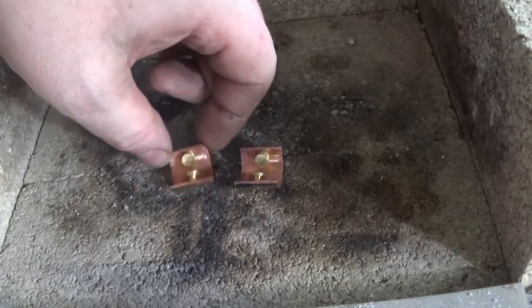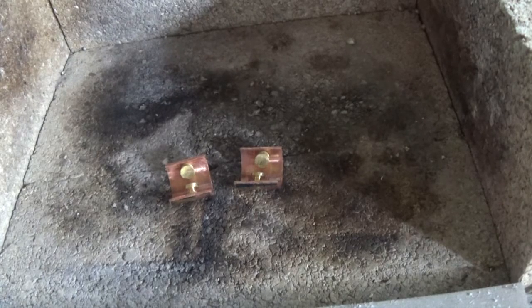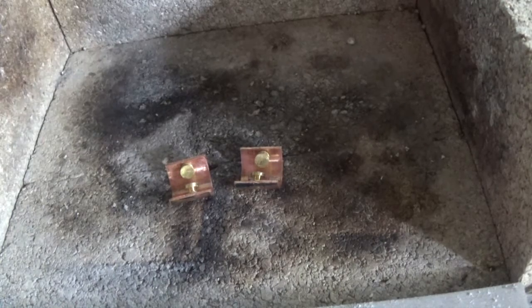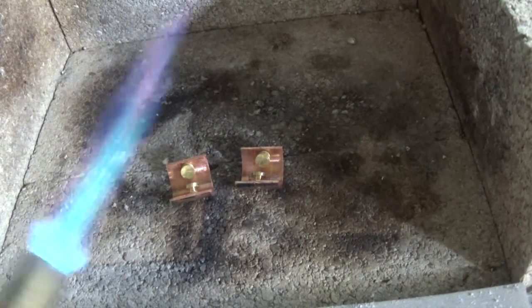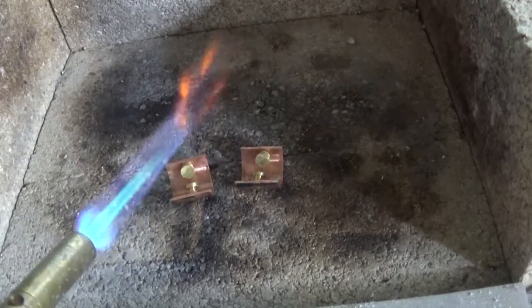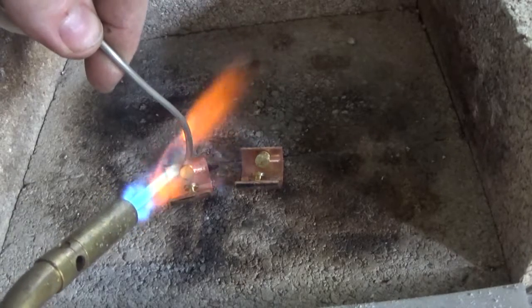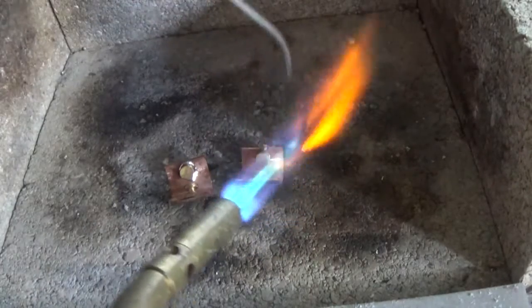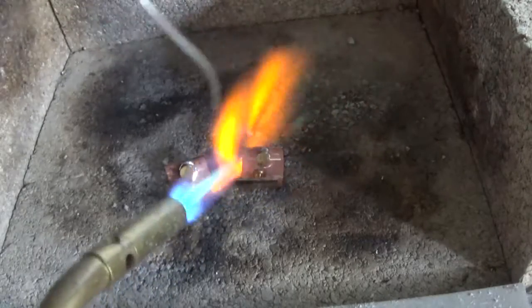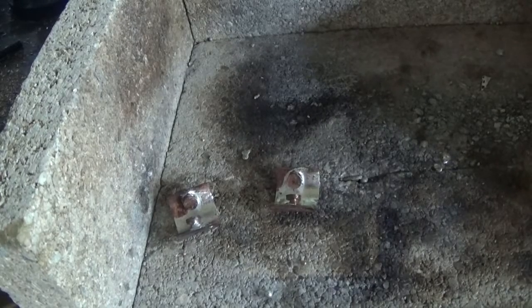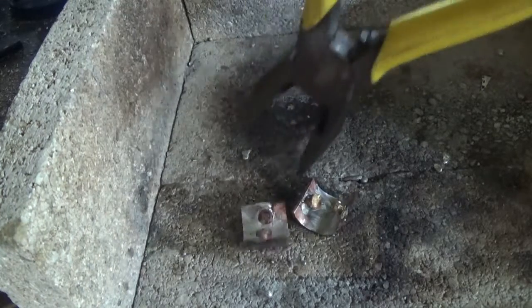So I'm just going to soft solder them that way when we polish the outside we're not going to clean off the hole of the rivet and they're not going to fall off or come loose. It's probably way too much solder, but they're in there nice and firm and they aren't going to come off.